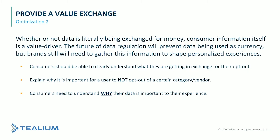The second optimization is providing a value exchange. Once you've met the legal requirements, you need to explain to the customer why you're showing a banner and why it's necessary for them to understand what will happen to their data before opting out. Under CCPA, there's still an opportunity to create a value exchange — by presenting the actual benefit to the user before they opt out, you will reduce your opt-out rates.